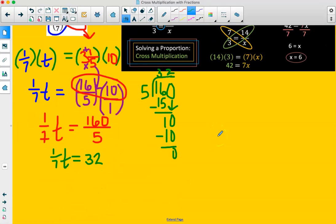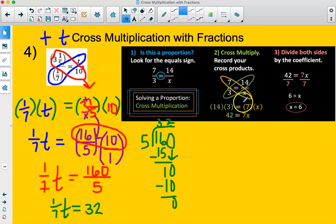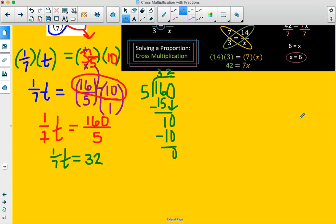So 1/7 t is equal to 32. We've completed step 2, cross multiply. Now we can divide both sides by the coefficient. The coefficient is 1/7. 1/7 is being multiplied by t. The inverse of multiplication is division, so we can divide both sides by 1/7. We're dividing by 1/7 because the 1/7 is the number that's keeping t from being alone. 1/7 divided by 1/7 equals 1.